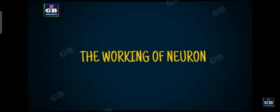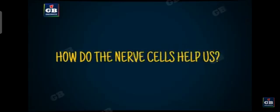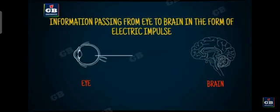Now let us see how the nerve cell functions. What is its role? What is its function? How do these nerve cells help us? Nerve cells help us in transmission of information from one part to another part of our body. Let us understand this with the help of an example.